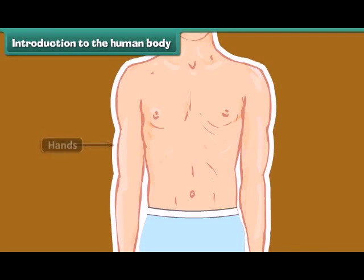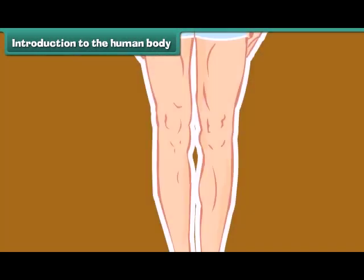Then we come to the hands that help us to hold things. Another body part is the stomach. It is a kind of a bag where all the food that we eat gets stored for digestion. And finally our legs that help us to stand straight, walk, run and play.